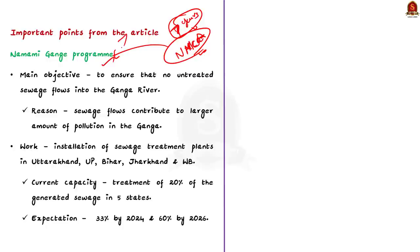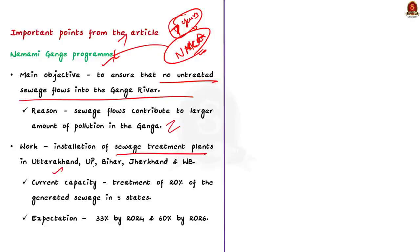The main objective of the Namami Ganga program is to ensure that there is no untreated sewage flowing into the Ganga river, as untreated sewage contributes the largest amount of pollution. The National Mission for Clean Ganga has installed several sewage treatment plants in the five states where the Ganga flows: Uttarakhand, Uttar Pradesh, Bihar, Jharkhand, and West Bengal.